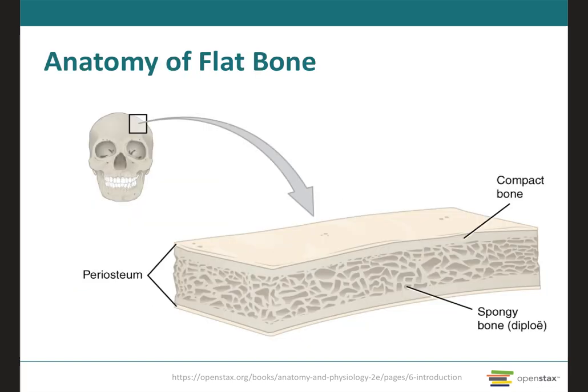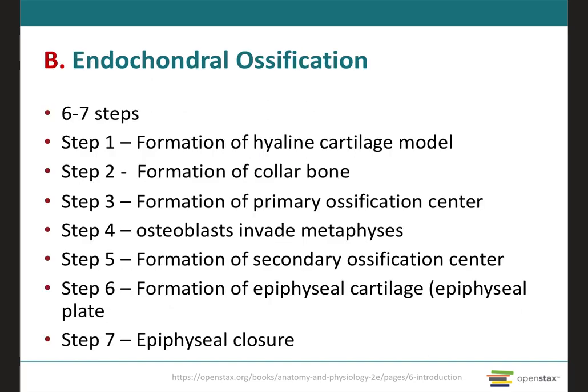On this figure, we see a cross-section of a flat bone showing spongy bone in the middle, lined on either side by a layer of compact bone. This compact bone is surrounded by periosteum. This is your intramembranous ossification.